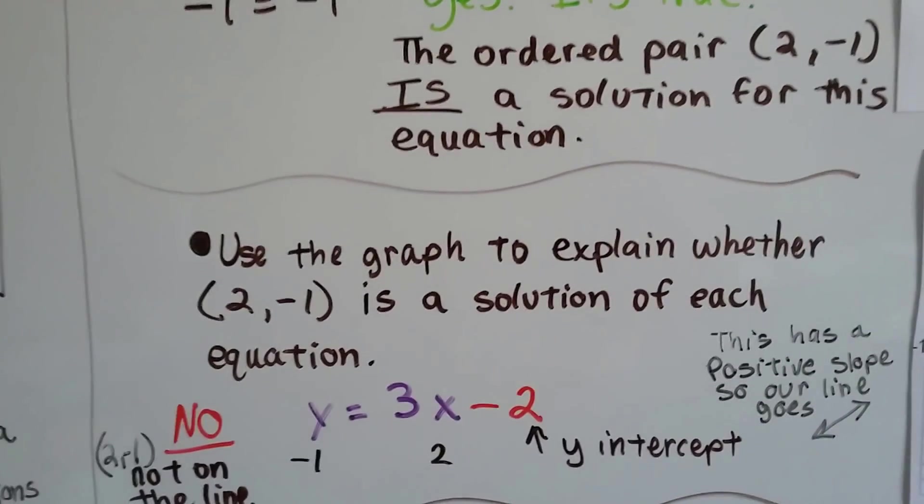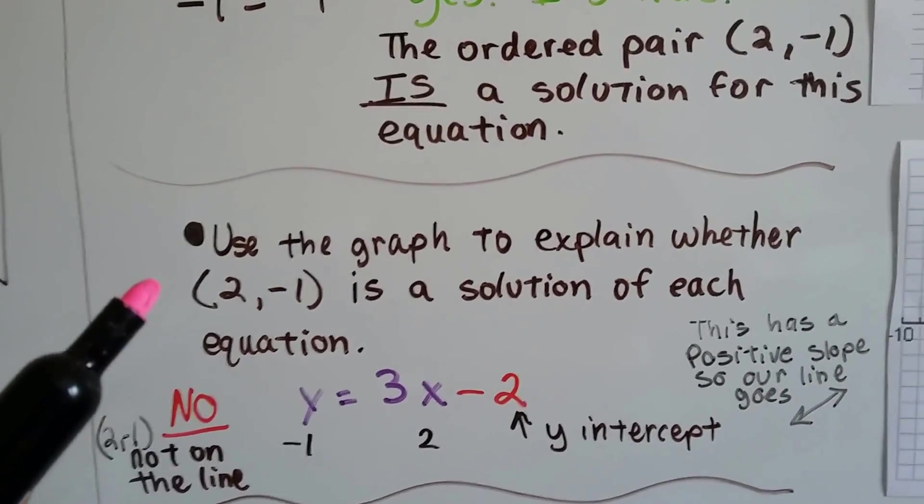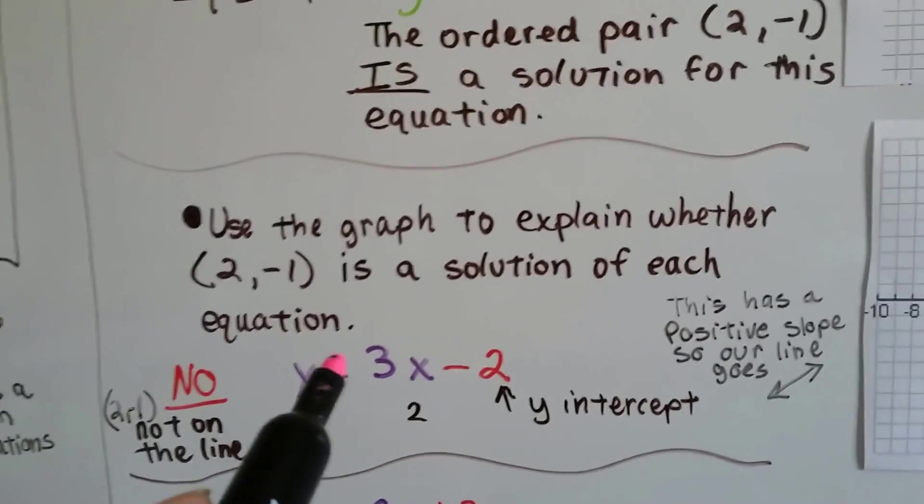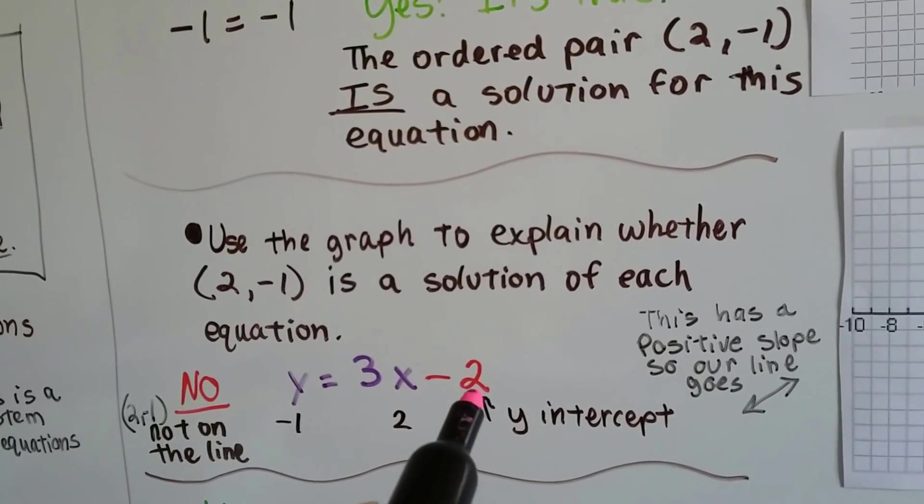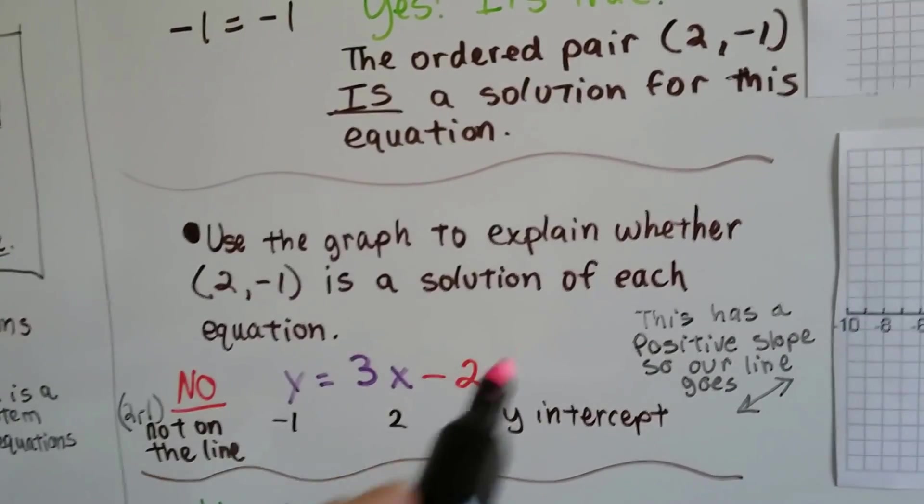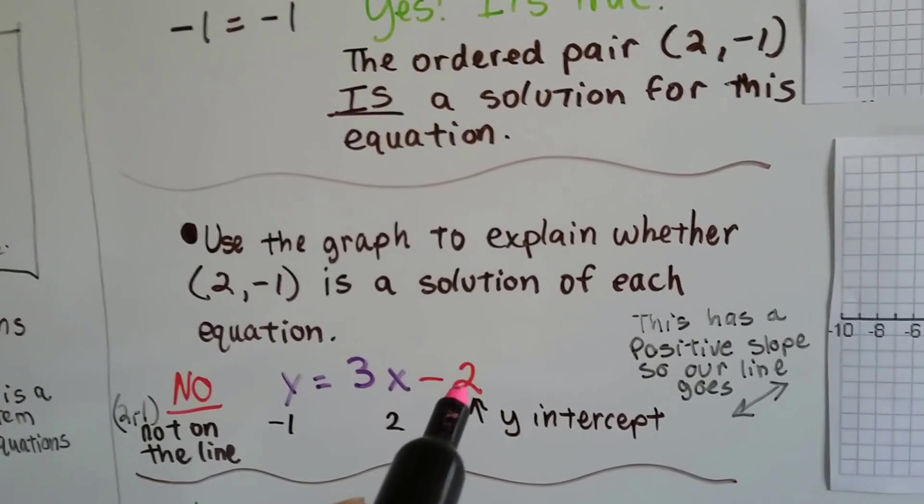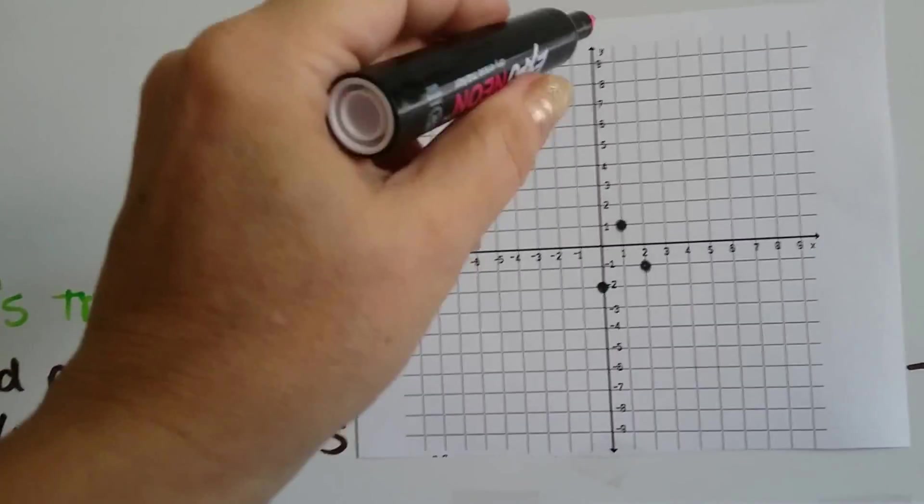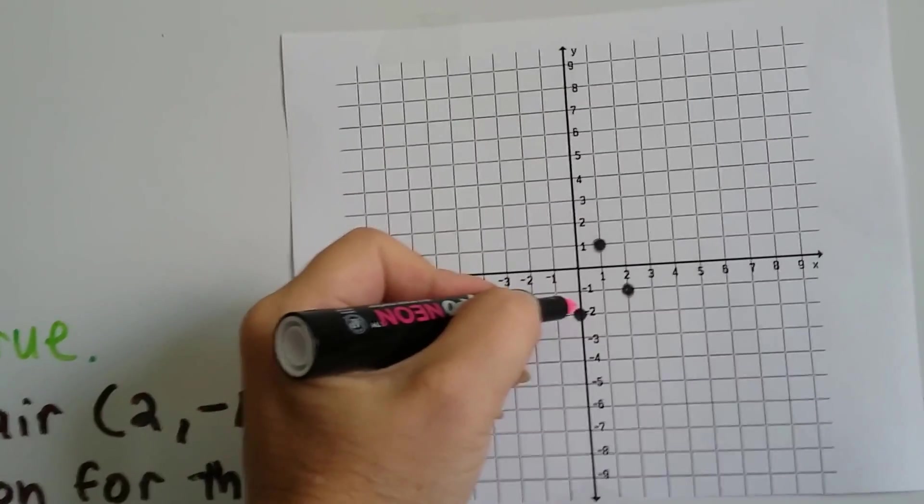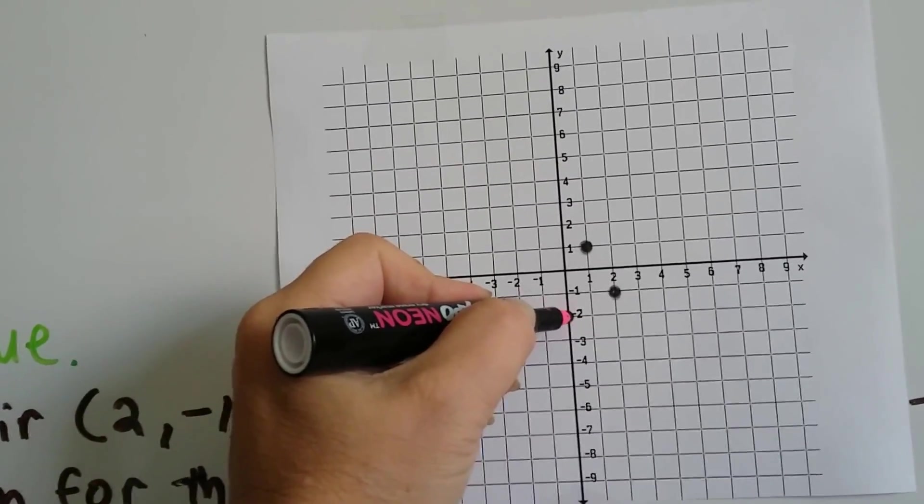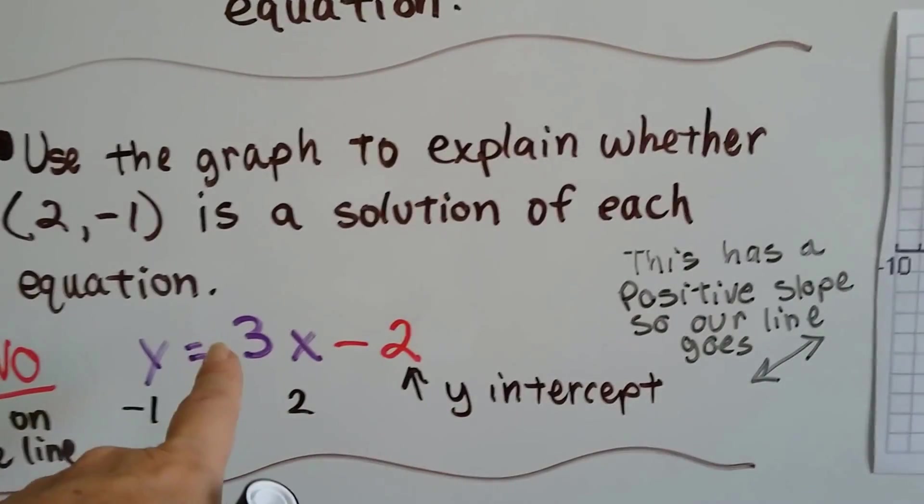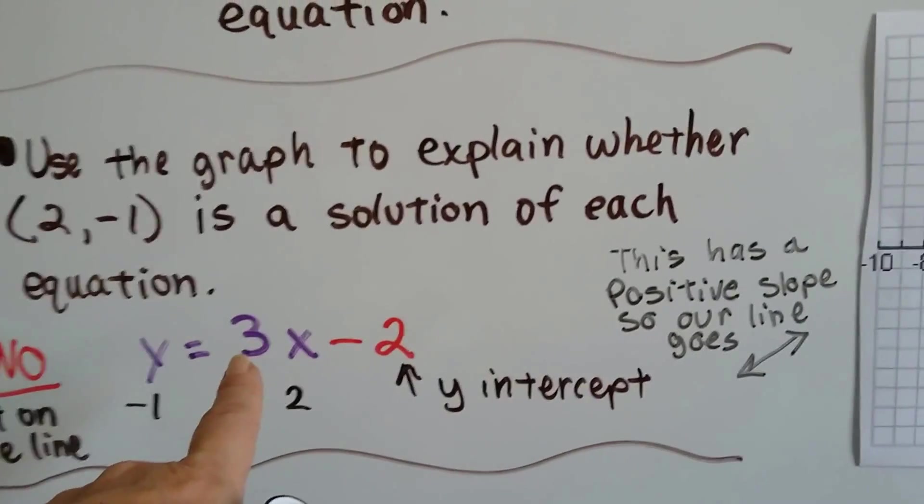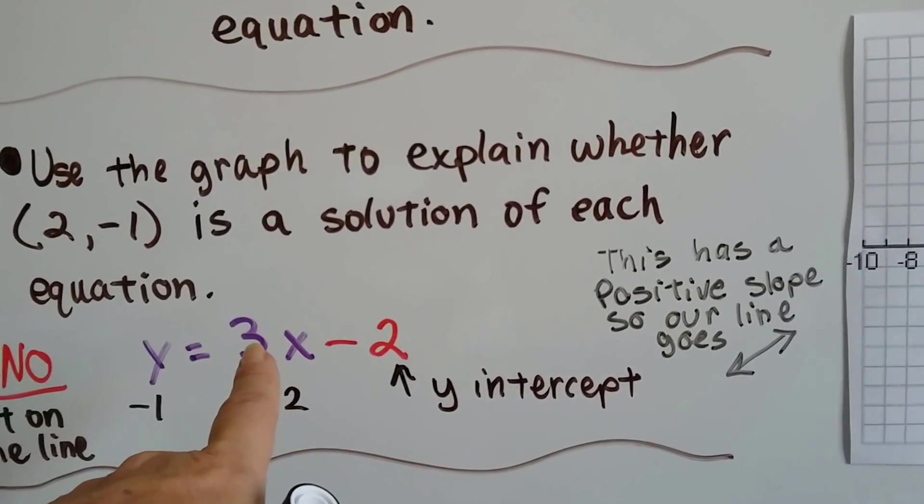Now, if we use a graph to explain whether 2, negative 1 is a solution of each equation, let's try graphing it. We know that this red one is the y-intercept b. So that tells us if we're going to graph this equation that it's going to hit the y-axis at the negative 2. Here's the y-axis. That means that equation is going to hit it right here at the negative 2. And it says that we have a positive 3 for our slope.